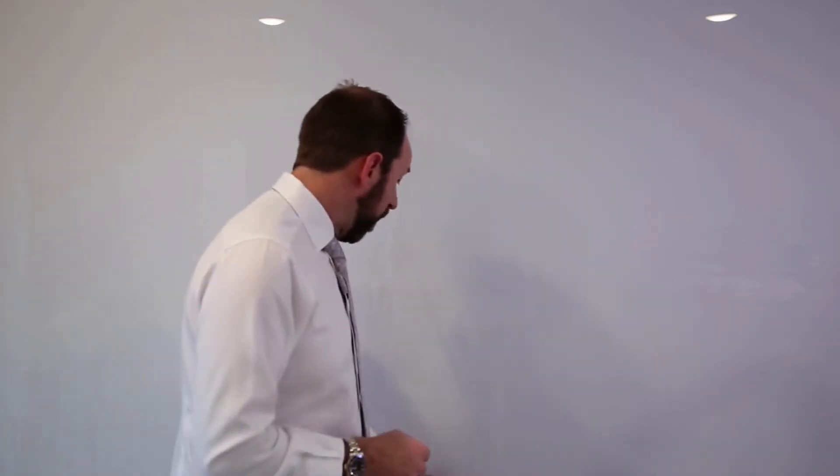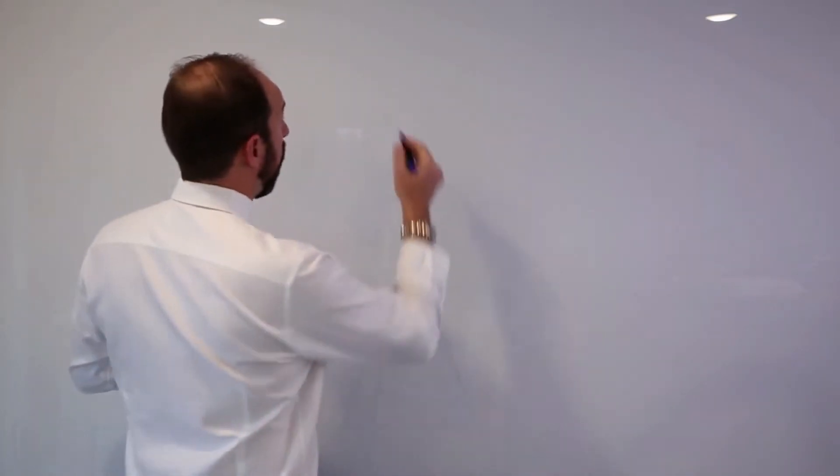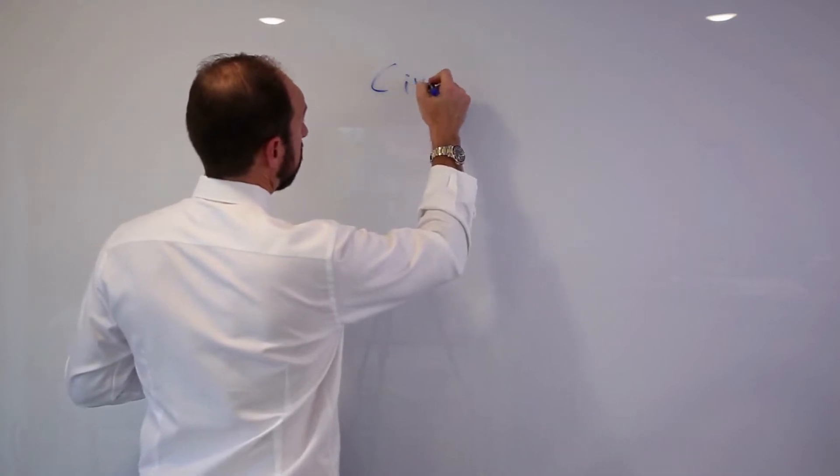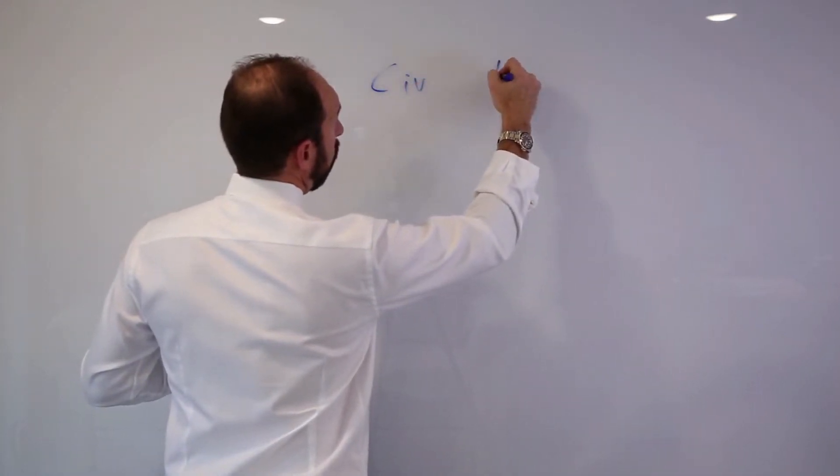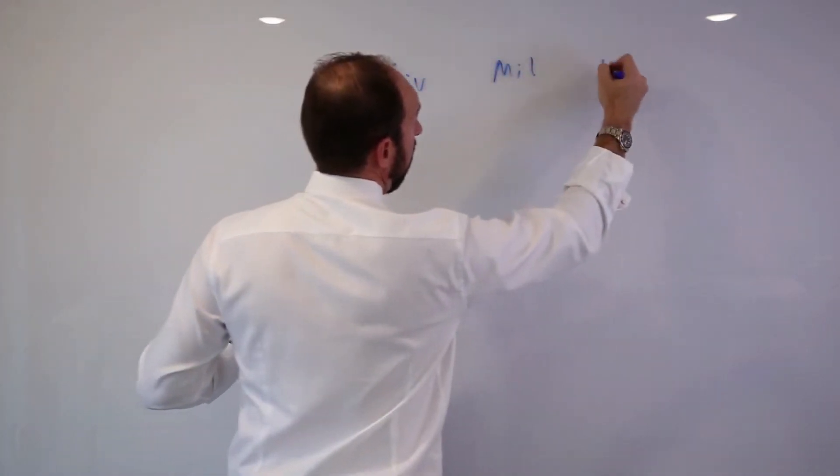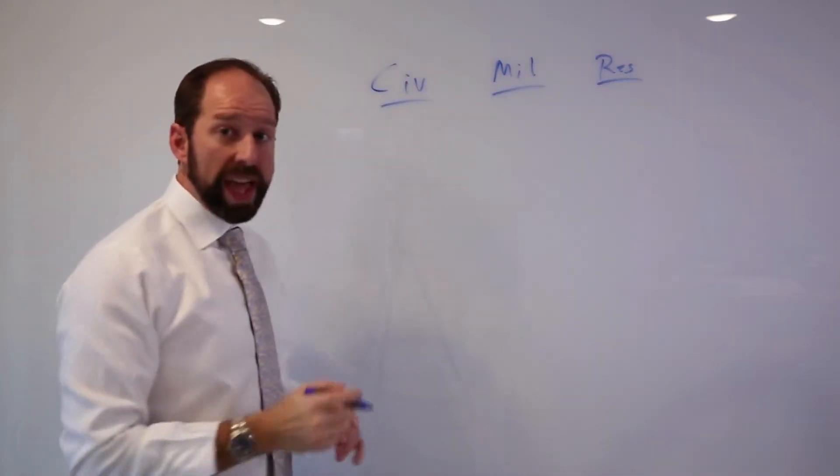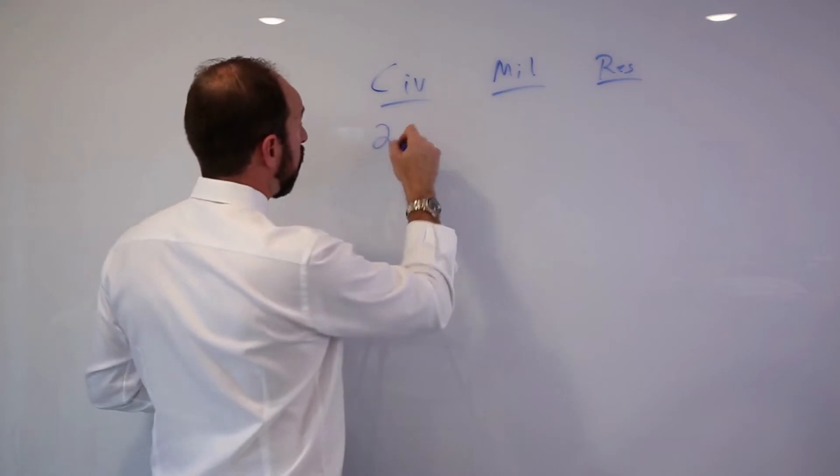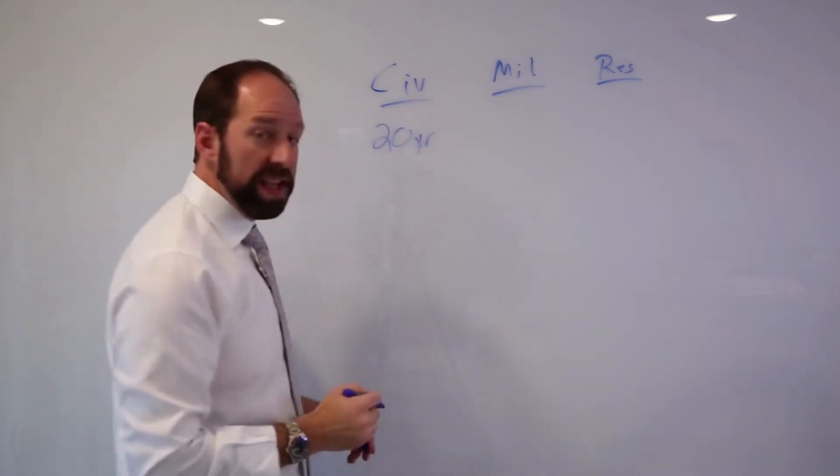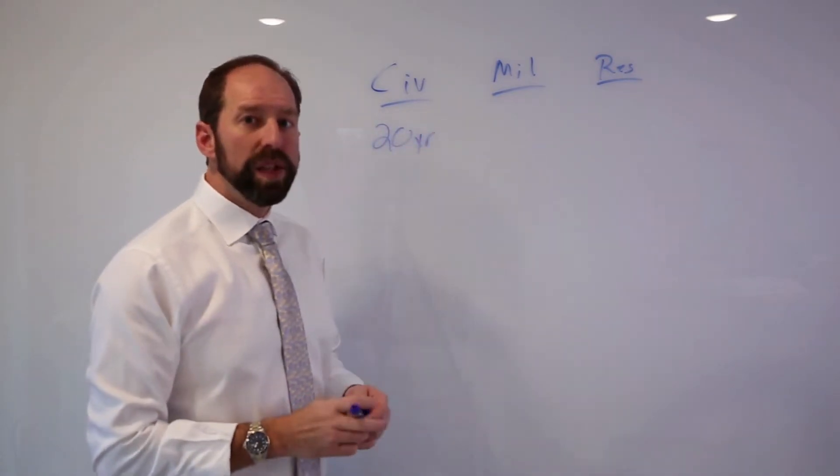Now, one of the things that we see with this is there's a lot of moving parts inside of here. We have three different types of service that we're looking at. We have one, which is just straight civilian service. We have another one, which is military service. And then we have reserve service. Kind of these three different categories. His civilian service is pretty easy. He said that was 20 years. But then he has this military service.